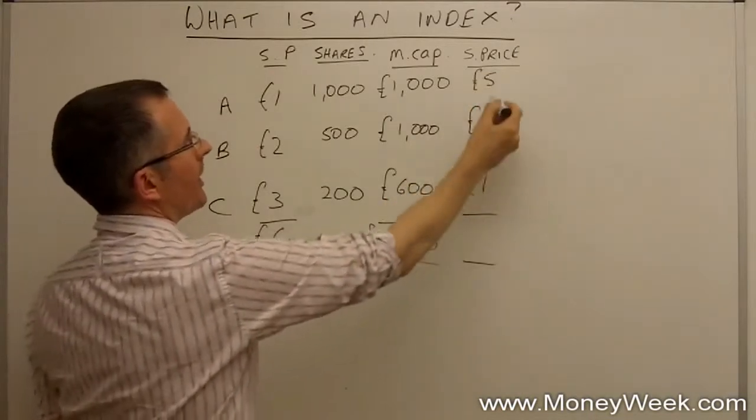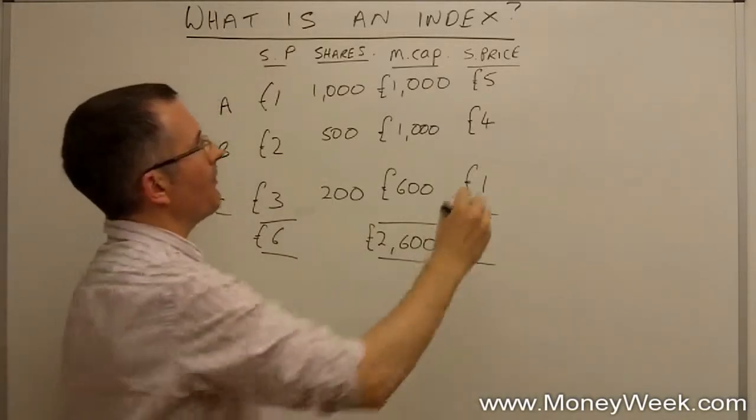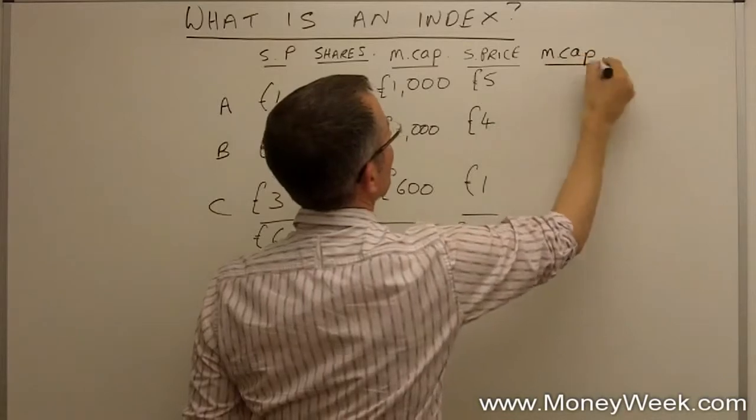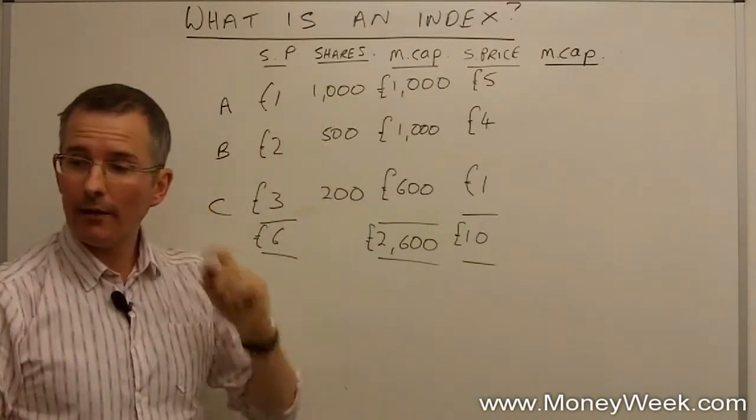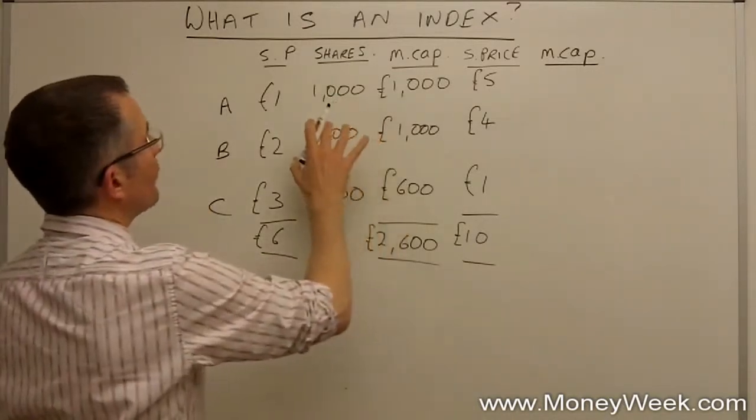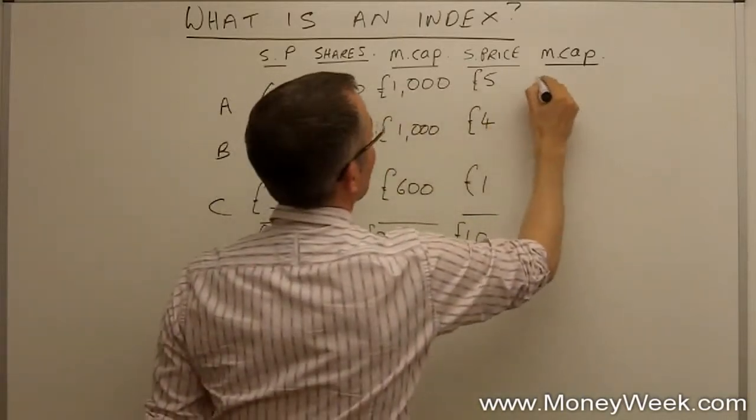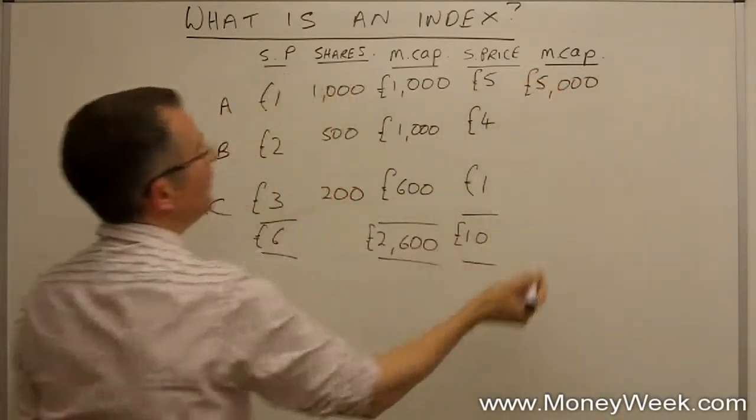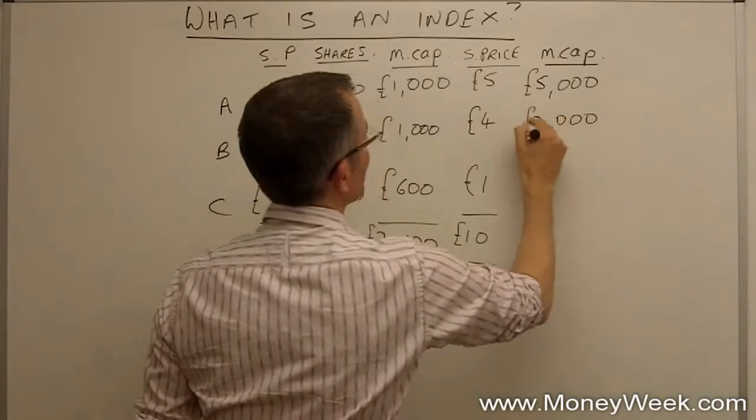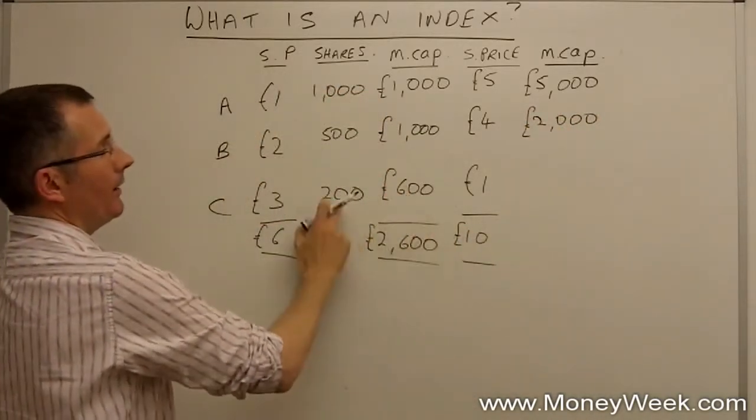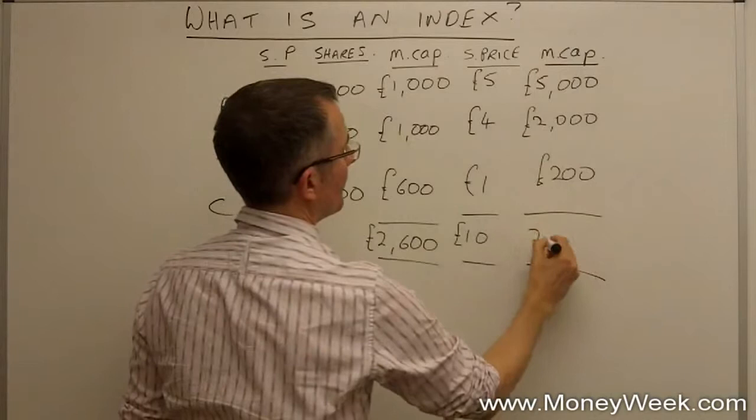Now the revised share prices just add up to ten pounds. For the revised market capitalizations, I'm going to take the new share prices and multiply by the number of shares still in issue. One thousand times five gives new market capitalization for company A of five thousand pounds. New market cap for company B is two thousand pounds, and for company C it's 200 pounds. Combined, that's seven thousand two hundred.